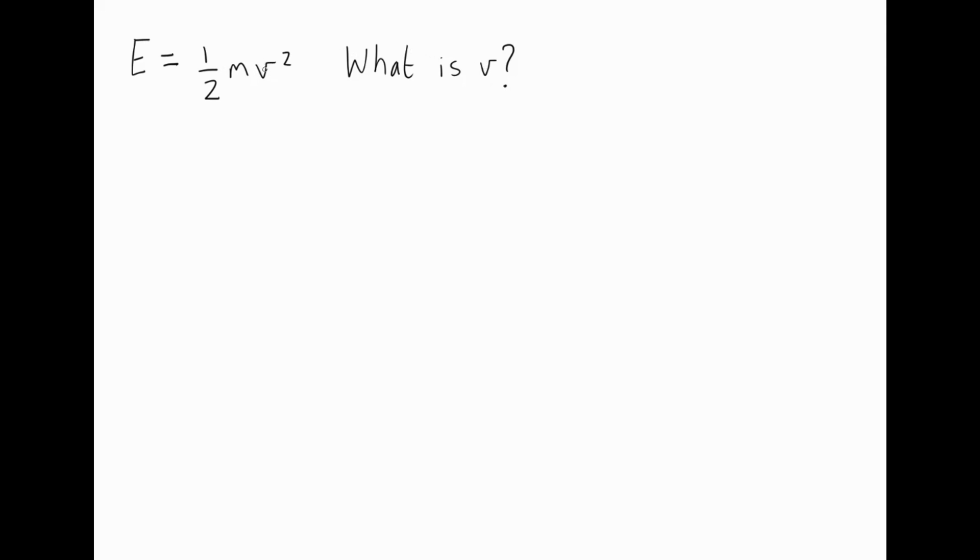Well look what's been done to V. V has been squared, it's been multiplied by M and it's also been multiplied by a half. So we have to undo all of that to find out what V is by itself. Now when you see something that's squared like this, you leave that until the end. We will undo the half part first, then we'll undo the M part, and finally we'll undo the squared part.